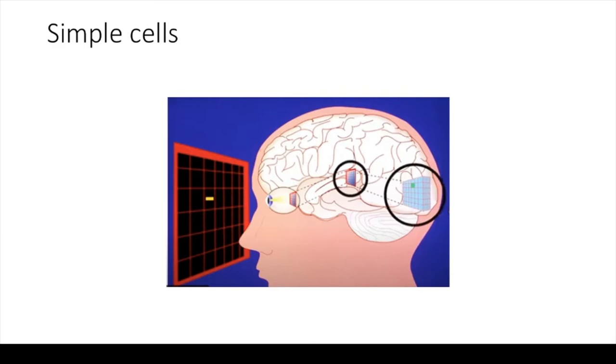Within the same square or receptive field, some neighboring cells prefer other orientations. The one in the picture is horizontal, but some are vertical, some are oblique.